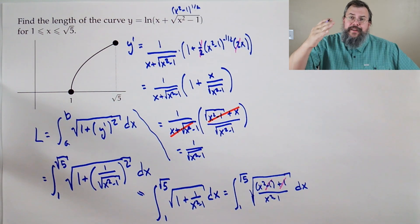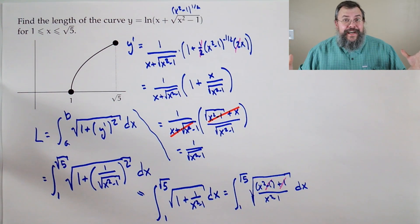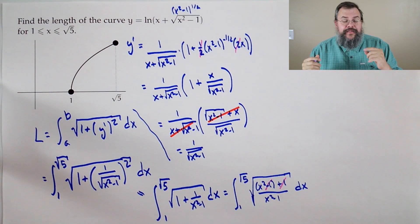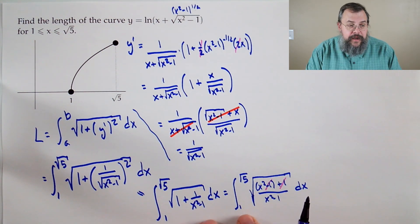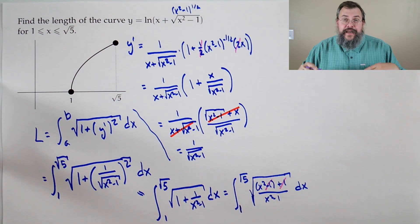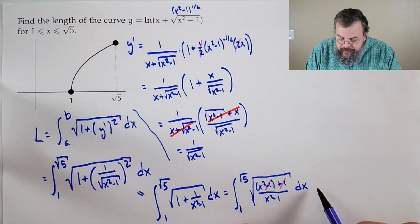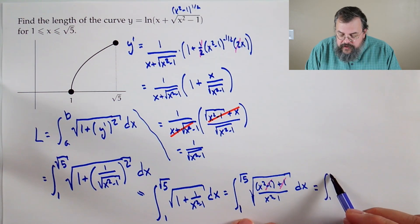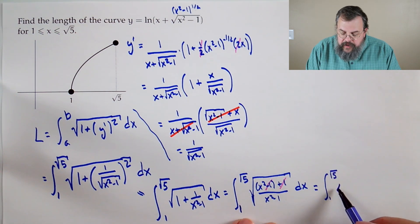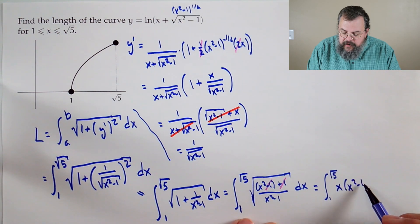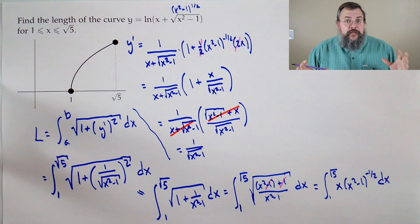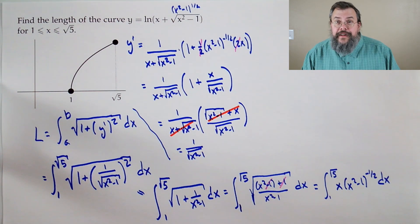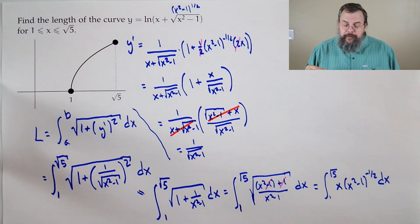Since x is going from 1 to root 5, x is positive, so the square root of x squared is just x — no absolute value needed. Now we use substitution: let u equal x squared minus 1, then du equals 2x dx. There's no factor of 2 in our integrand, but we put a 2 in and compensate with a one-half out front. So 2x dx becomes du. Updating the bounds: plug in 1 gives 1 minus 1 equals 0; plug in root 5 gives 5 minus 1 equals 4.